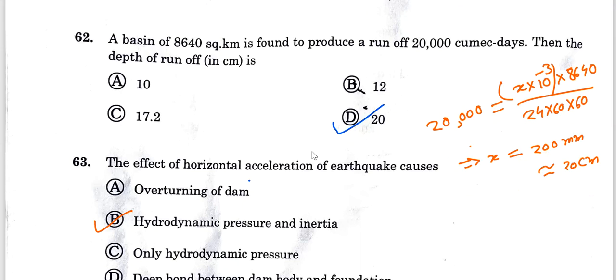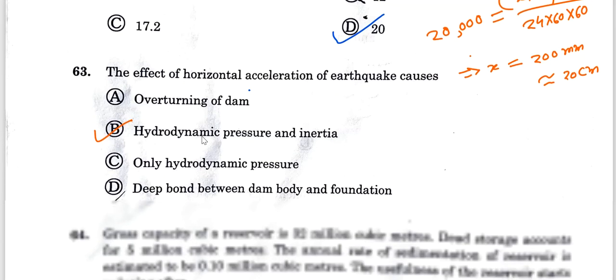Question 62: Basin area is 640 square kilometers and runoff is 20,000 cubic meters per day. To find the depth of runoff, 20,000 equals 640 times X, where X is the depth of runoff. Solving this equation, the depth of runoff is 200 mm or 20 cm. This is the correct answer.